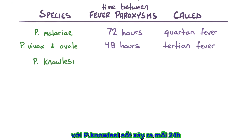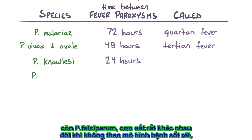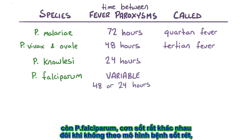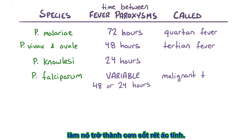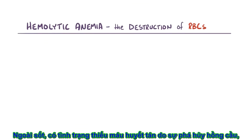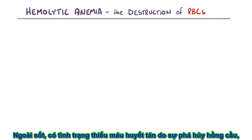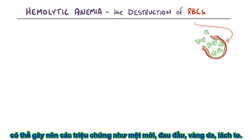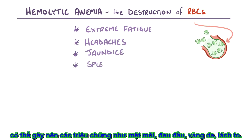For Plasmodium knowlesi, the fever happens every 24 hours. For Plasmodium falciparum, the pattern can vary, sometimes following the pattern of a tertian fever, while other times the fevers happen daily, earning it the name malignant tertian fever. In addition to fevers, the hemolytic anemia — the destruction of red blood cells — also causes symptoms like extreme fatigue, headaches, jaundice, and splenomegaly.